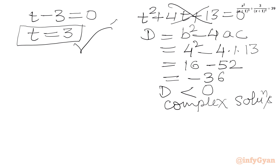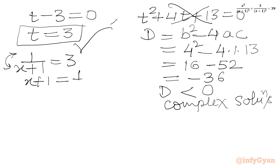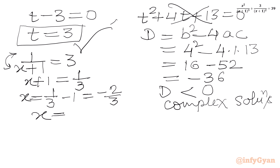Now t was our substitution: 1/(x+1) = t = 3. Flipping numerator and denominator gives x + 1 = 1/3. Now subtract 1 from both sides: x = 1/3 − 1 = −2/3. So our final answer is x = −2/3.